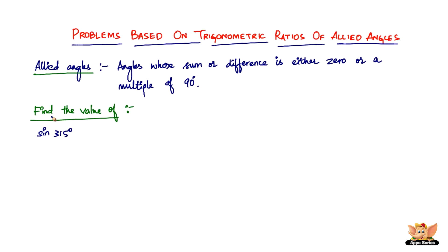The first question says: find the value of sine 315 degrees. We know the values of sine 0, sine 90, sine 45, and so on — but what is sine 315 degrees? This is where the allied angle concept comes into play. What we're going to do is write 315 in terms of a multiple of 90 degrees.